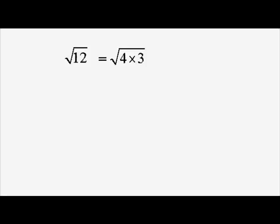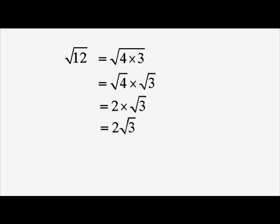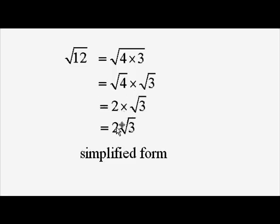Now, both of those rules come in when we're doing things like rewriting root 12 in a different way. Root 12 is root 4 times 3. We split into root 4 times root 3. But root 4 is simply 2, since 4 is a square number, so that's 2 times root 3, which we write more simply as 2 root 3. This is root 12 in simplified form — we've taken the 4 outside the square root and called it 2. If asked to simplify root 12, this is what your answer should be.